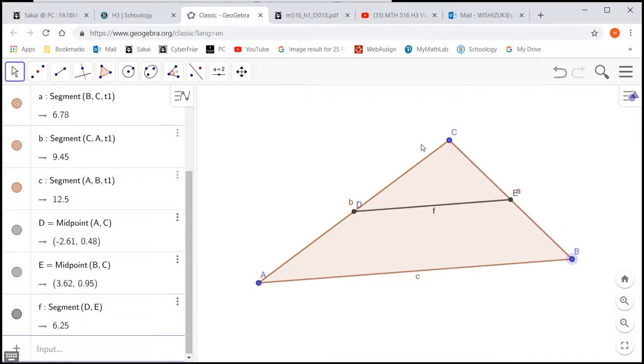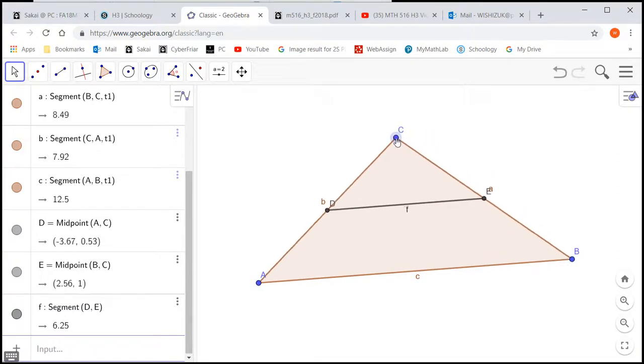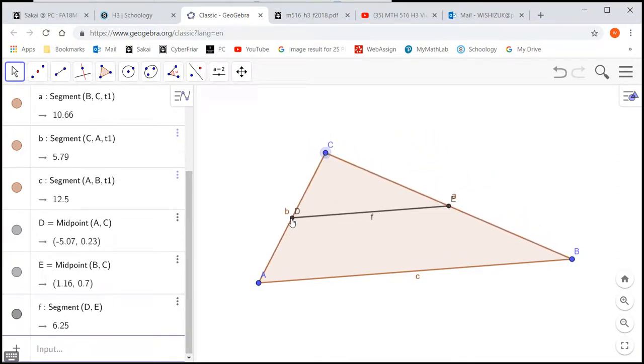But the midpoint is going to be constantly adjusted. So if you have a different triangle, this is still the midpoint of A and C and this is still the midpoint of B and C.